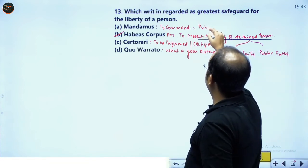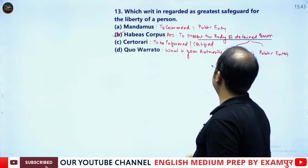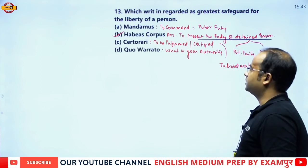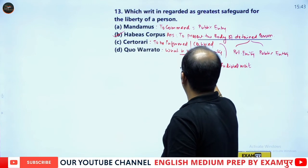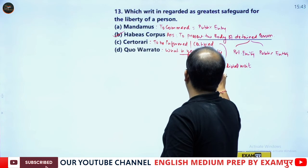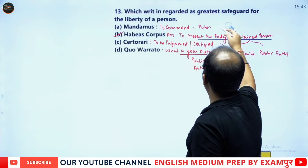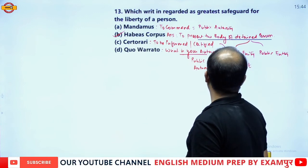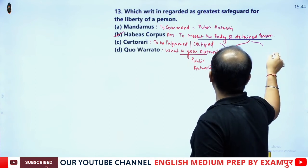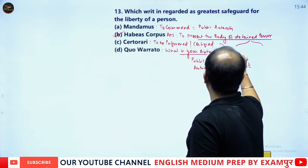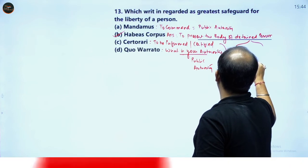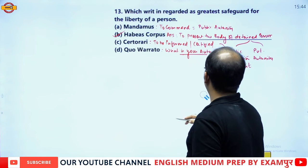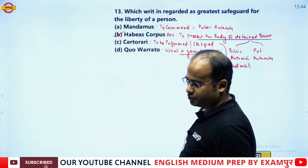Mandamus means 'to command' and is only for public authority. Certiorari means 'to be informed or certified' and is judicial in nature. Quo Warranto means 'by what authority' and is also for public authority. Therefore, the correct answer is option B, Habeas Corpus.